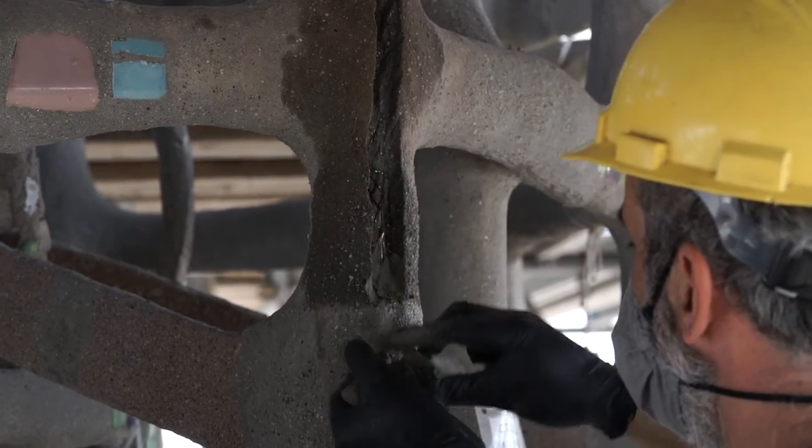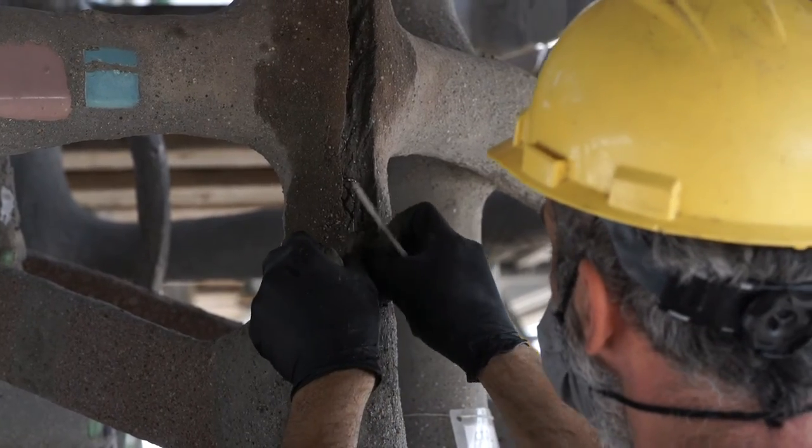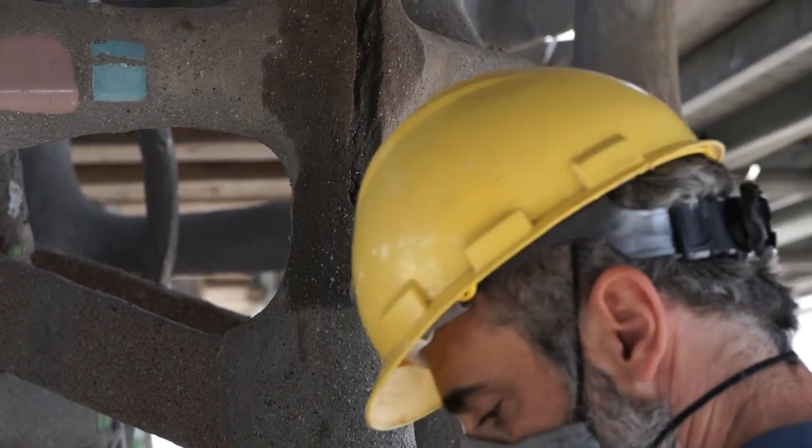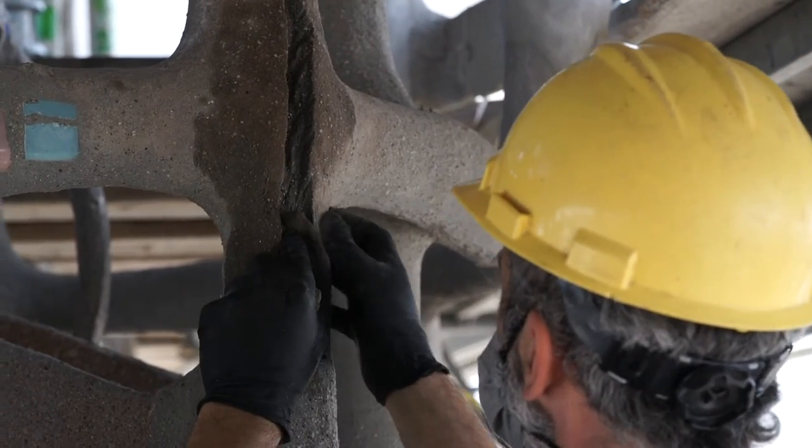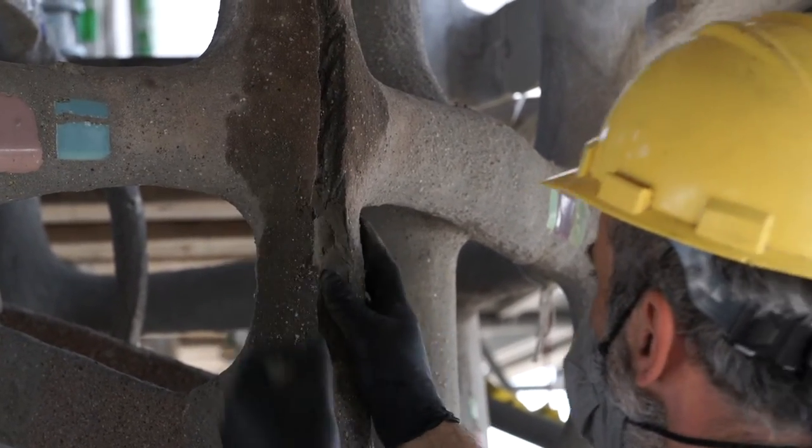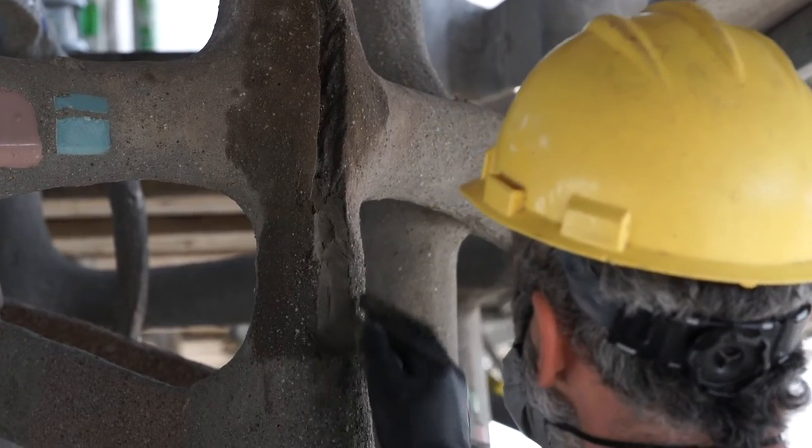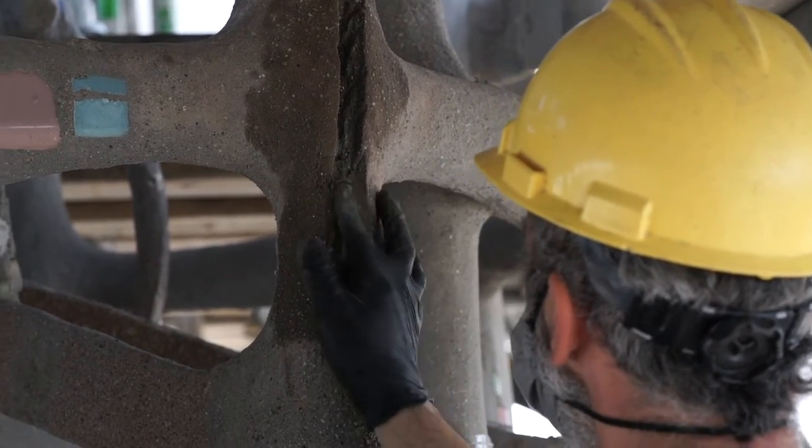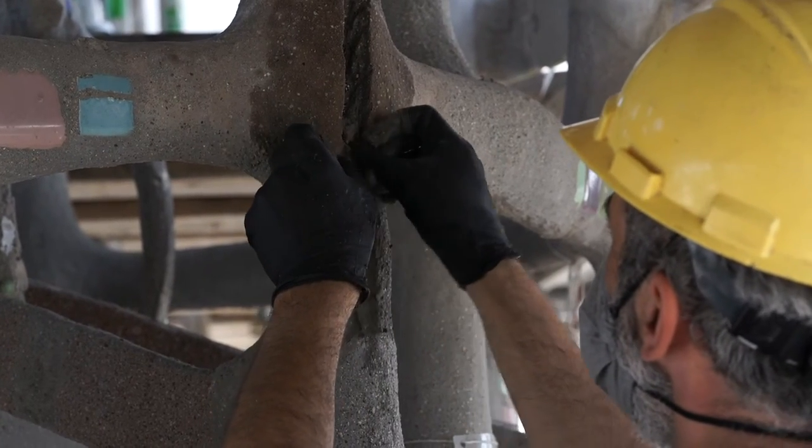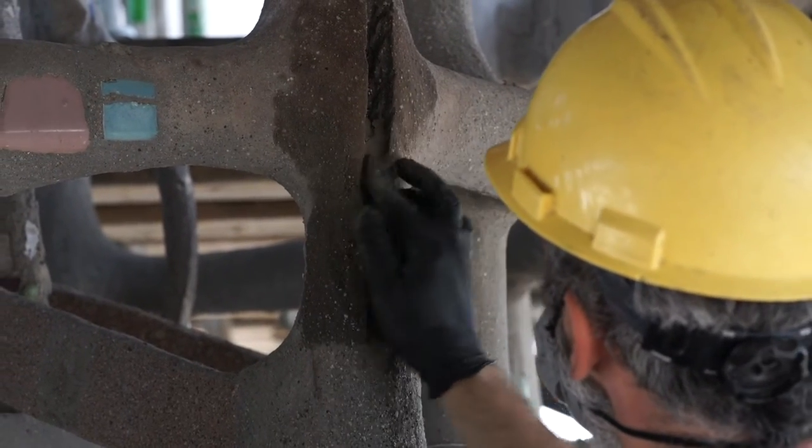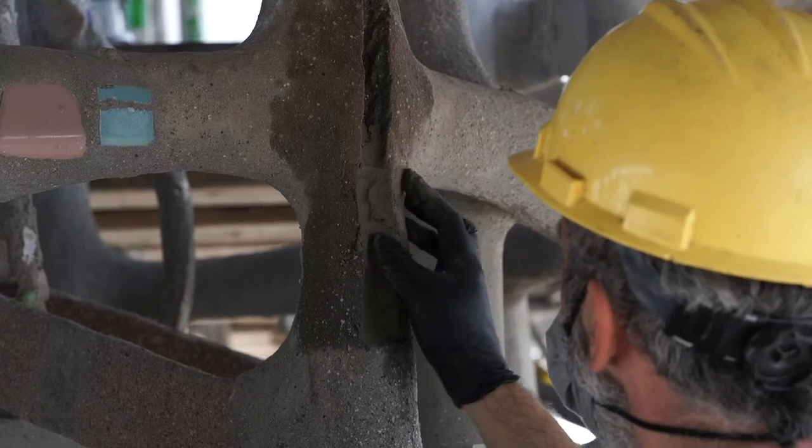A crack or a spalling of the cement is always indicative of a problem. The wider the crack, the higher the chance of a problem inside the armature. So we will start by opening up the crack and reach the armature.